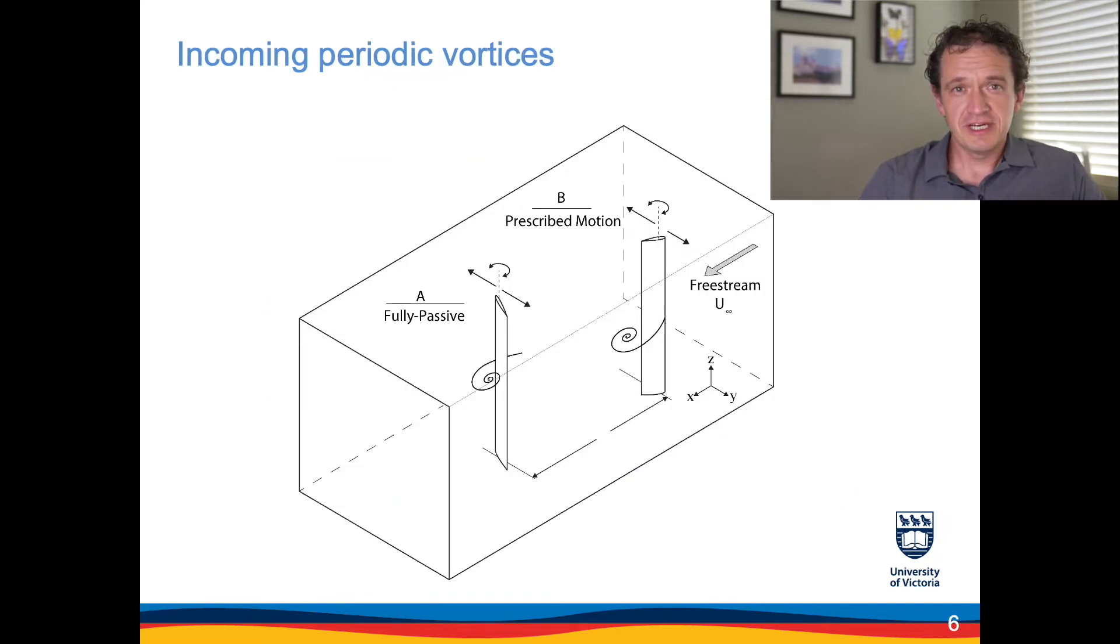The first type of disturbance that we investigated involved periodically shed vortices. So this is the foil of interest, this is the passively oscillating foil. It was positioned in the wake of an identical foil that was undergoing a prescribed motion, a prescribed combination of pitch and heave. And the vortices generated by this upstream foil were interacting with the passive one.